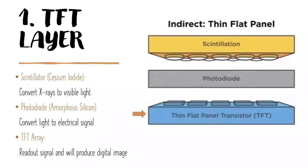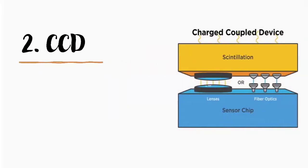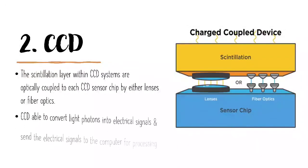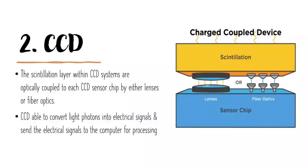Moving on to the next one is CCD. The scintillation layer within the CCD system is optically coupled to each CCD sensor chip by either lenses or fiber optics. CCDs are able to convert light photons into electrical signals and send the electrical signals to the computer for processing.